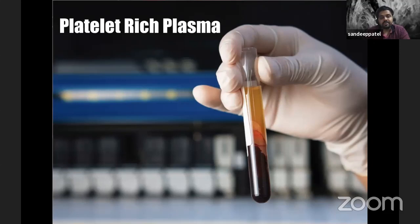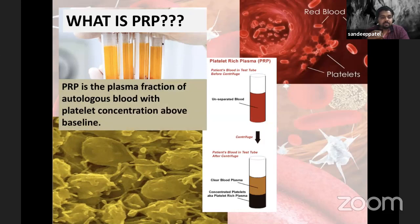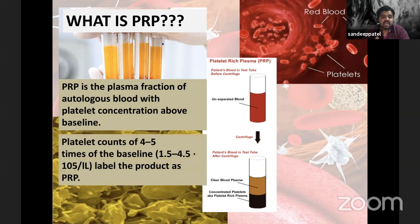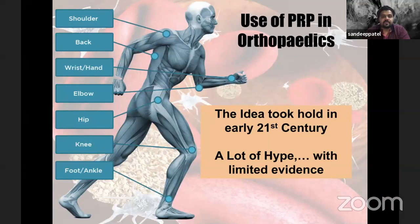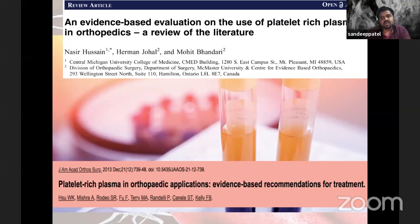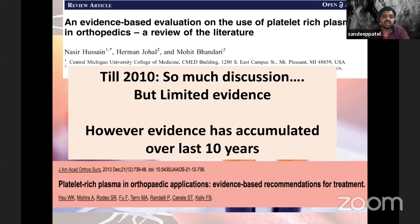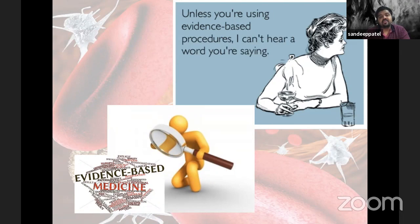Today's topic is platelet-rich plasma, presented in two halves: the knee, then musculoskeletal indications. PRP is the plasma fraction of autologous blood with platelet concentration above baseline — at least four to five times concentration is required to label the product as PRP. Synonyms include platelet-rich concentrate and platelet-rich fibrin. The idea took hold in the early 21st century with a lot of hope but limited evidence. However, evidence has accumulated over the last ten years and we must rely on evidence-based medicine.